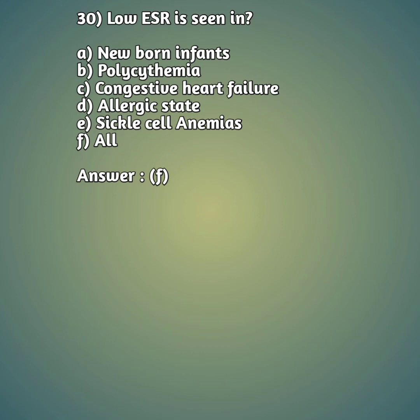Question 30: Low ESR is seen in which conditions? Option A: newborn infants, option B: polycythemia, option C: congestive heart failure, option D: allergic state, option E: sickle cell anemia, option F: all. The right answer is option F, all. Low ESR is seen in newborn infants, polycythemia, congestive heart failure, allergic state, and sickle cell anemia.